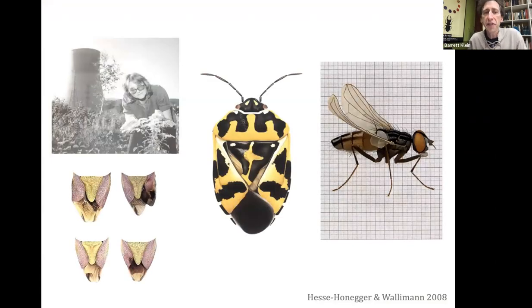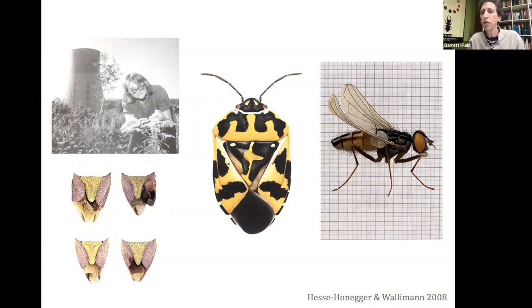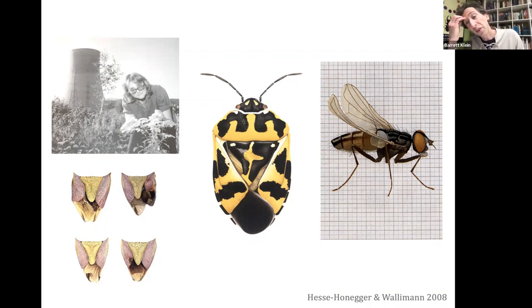Cornelia Hesse-Huniger was a scientific illustrator and artist who became a collaborative scientist and environmental activist. She would discover true bugs and other insects — even some plants — in the vicinity of the cleanest nuclear power plants, mutated. She claims that bilateral asymmetries are due to radiation from Chernobyl and Three Mile Island, even in plants that haven't melted down.